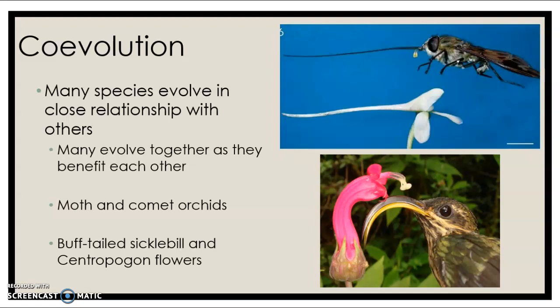Another example of co-evolution is predator and prey, like cheetahs and gazelles. The fastest cheetahs are the ones that catch gazelles, so they evolved to be the fastest — slower ones can't eat and are unable to survive. Similarly, the fastest gazelles are the only ones that survive, while slower ones get caught and eaten. This relationship drives both species: the cheetah gets faster and the gazelle gets faster, resulting in both animals becoming some of the fastest organisms in their ecosystems.